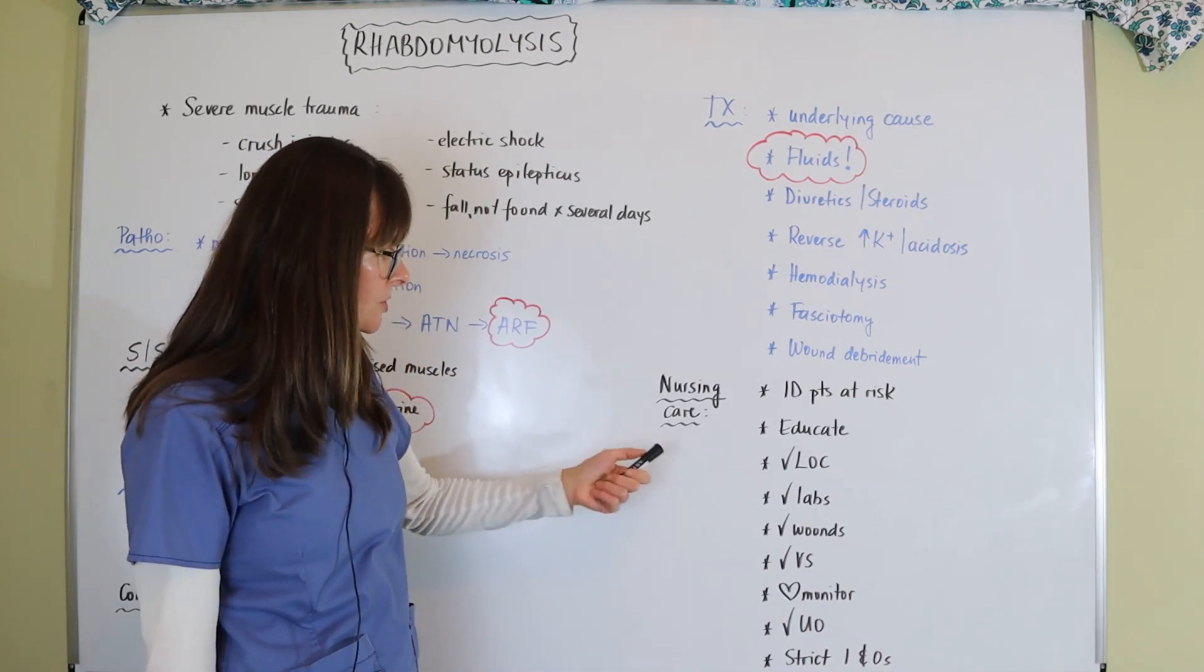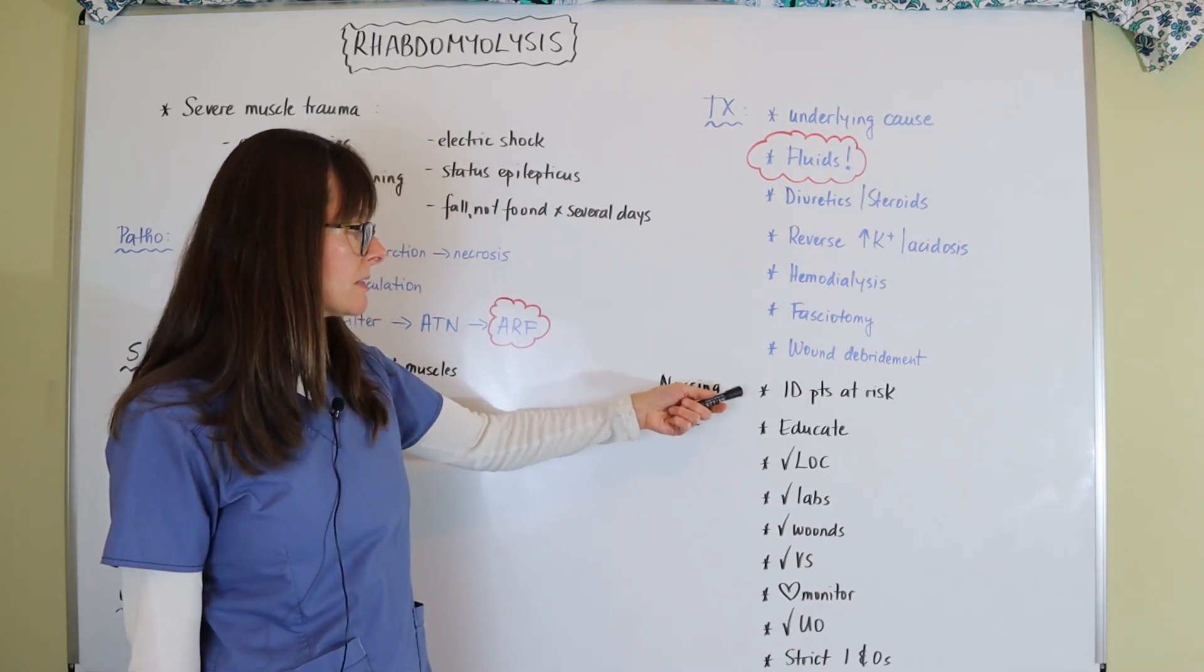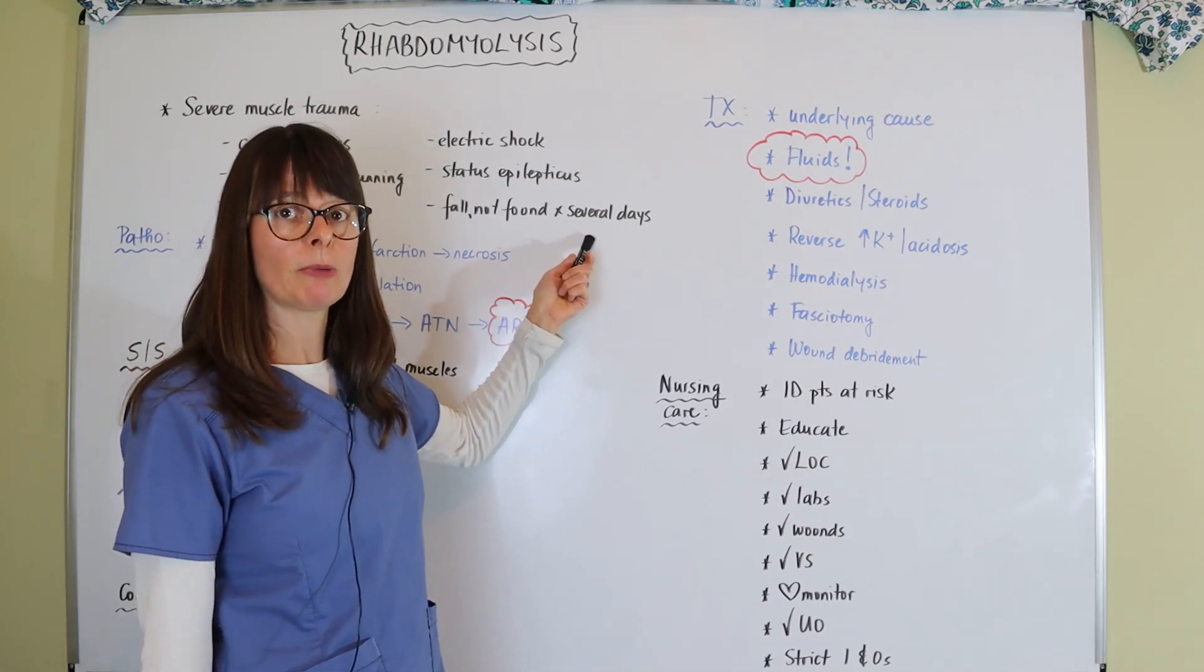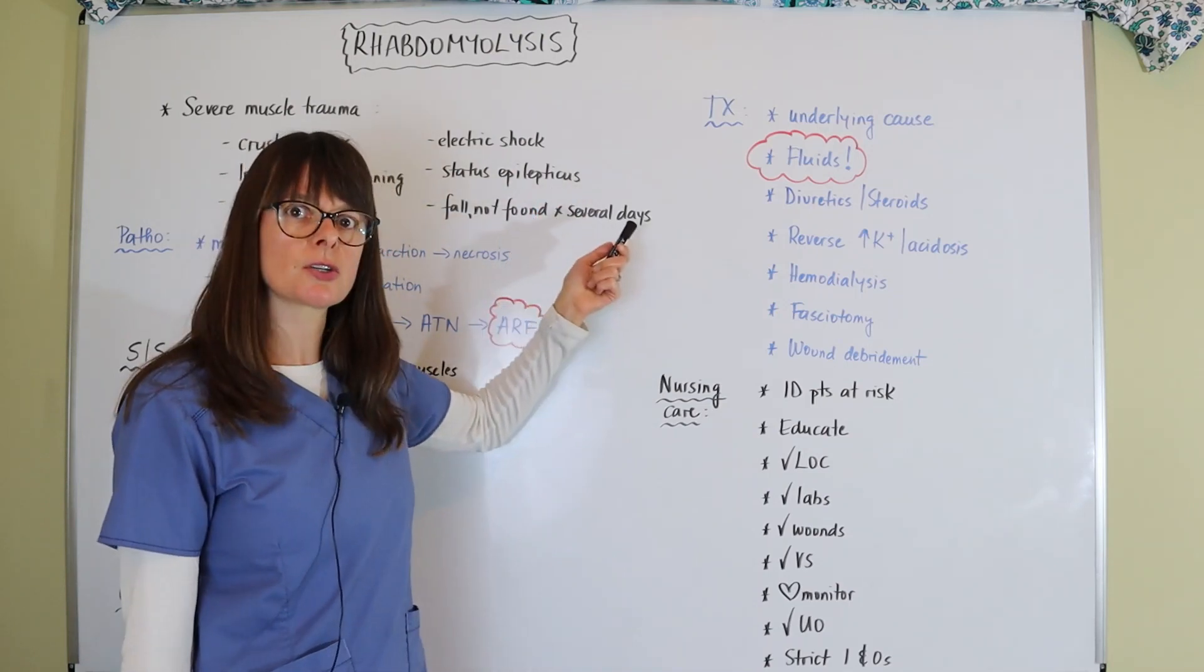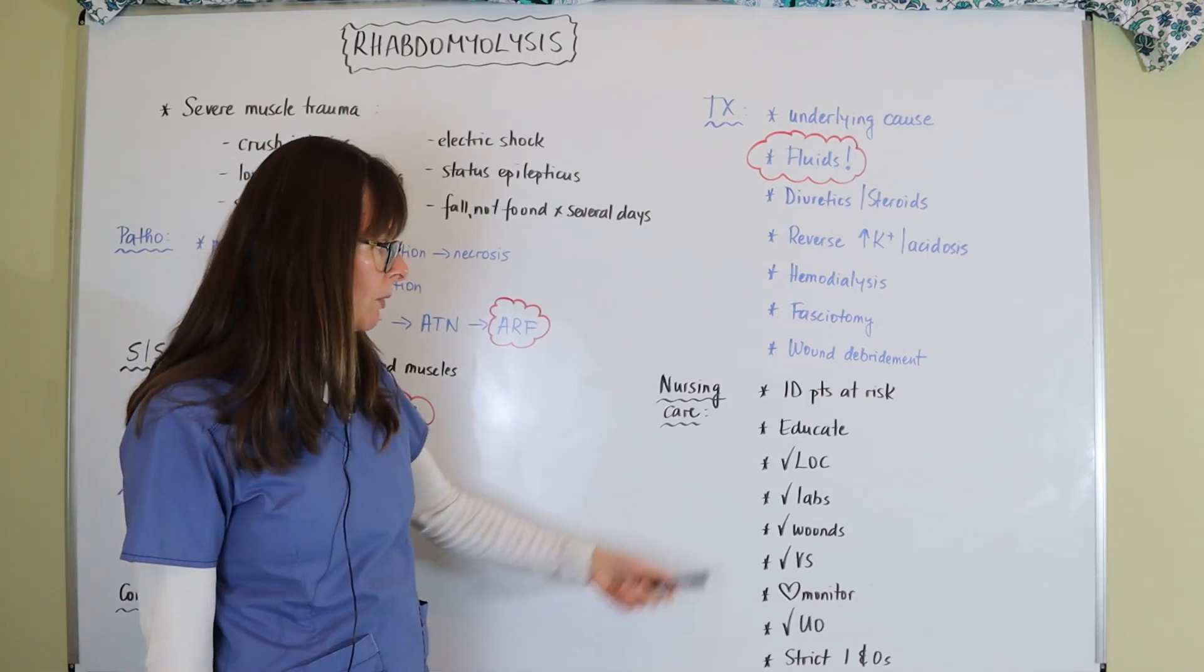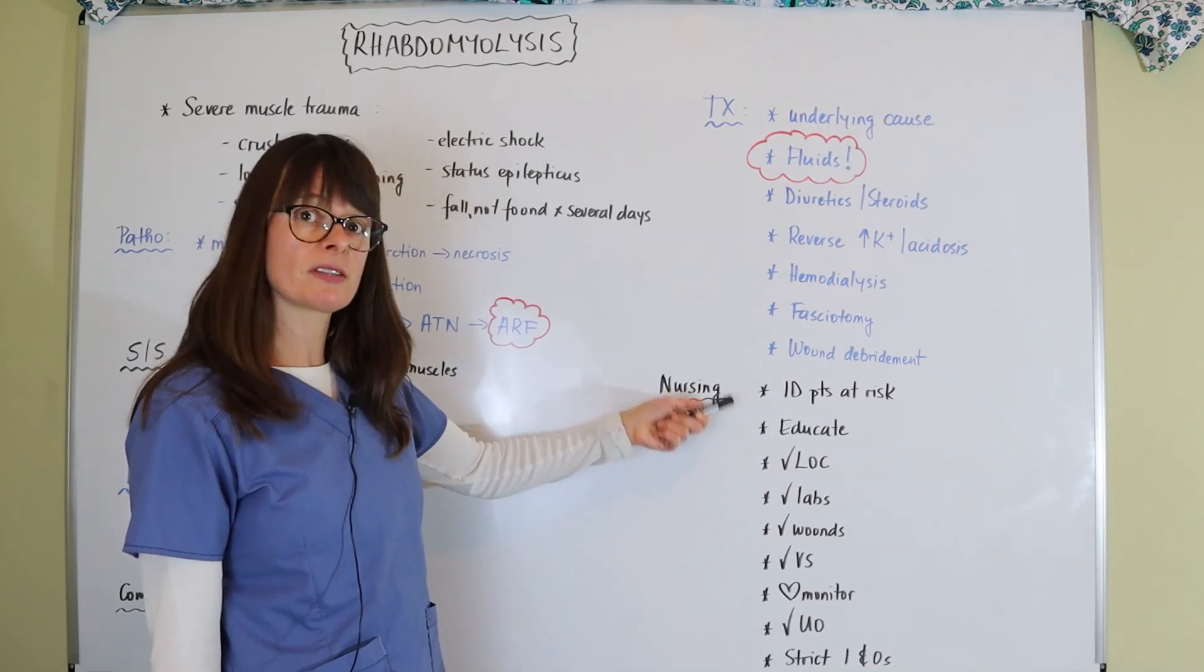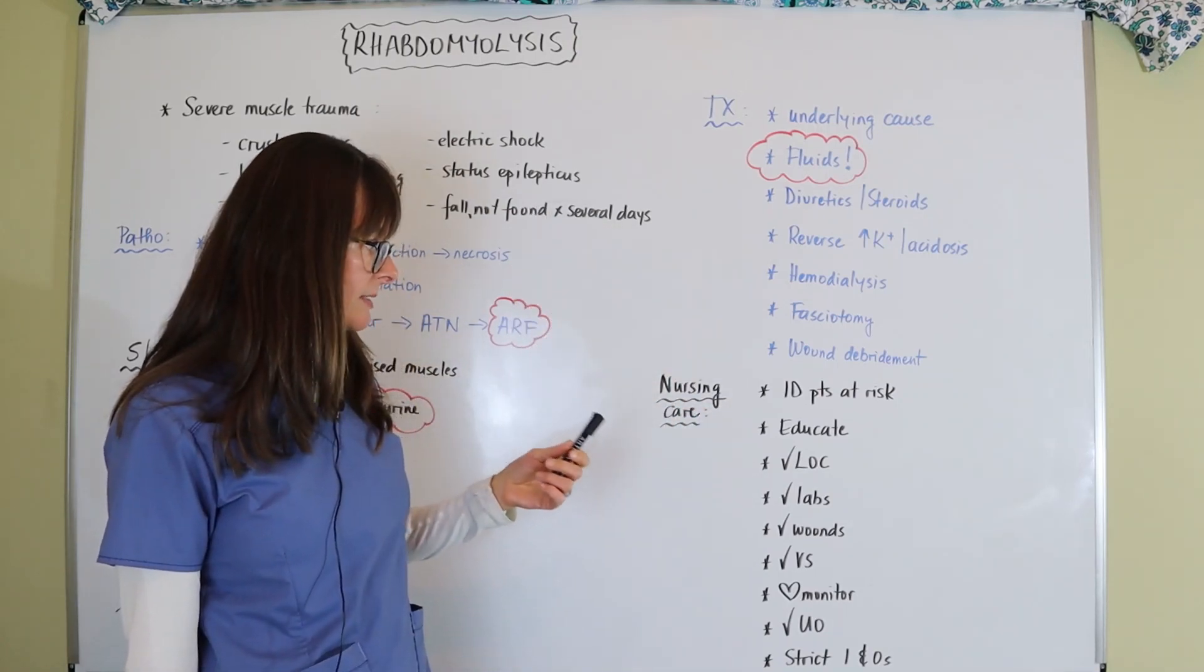Nursing care, nursing indications here: identify patients at risk. So elderly patients, identify them before they fall at home and lay there for several days and then come in injured. Identify patients with seizures, with history of seizures, so they don't experience status epilepticus. We want to educate our patients about the risks that they might have with long distance running if they're not experienced, for example.